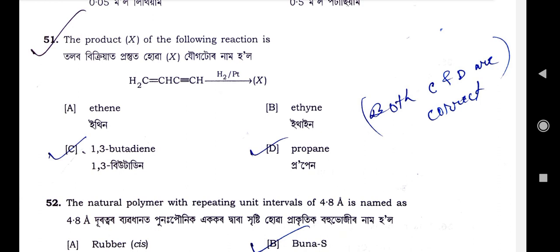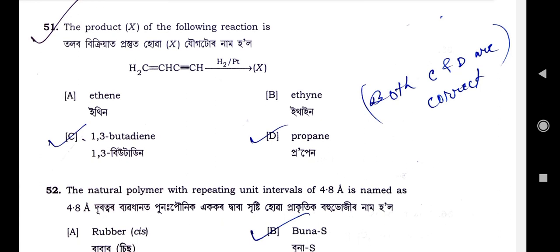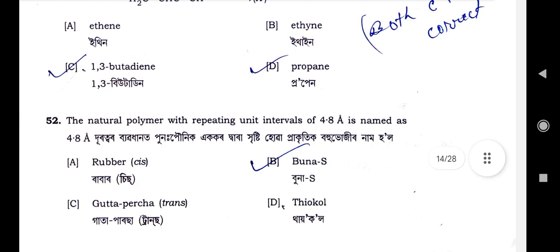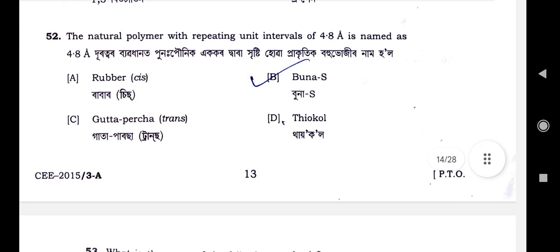For question 51, there is a little confusion — option 2 is shown as correct, but option C and option D may also be correct, giving 1,3-butadiene and propane. Out of the two, the most appropriate answer is option C: 1,3-butadiene. Question number 52: The natural polymer with a repeating unit interval of 4.8 Å is named as option B — Buna-S. Options C and D are wrong; option B, Buna-S, is correct.